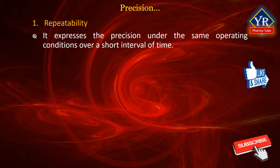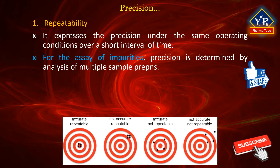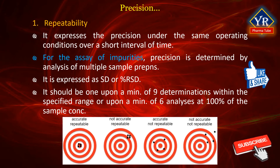Repeatability expresses the precision under the same operating conditions over a short interval of time. Normally, the same analyst with the same equipment carries out the analysis within one day within the same laboratory. For the assay or quantitative determination of impurities, precision is determined by analysis of multiple sample preparations, and is typically expressed as standard deviation or relative standard deviation. According to ICH recommendation, this should be done upon a minimum of nine determinations within the specified range, or upon a minimum of six analyses at 100% of the sample concentration.